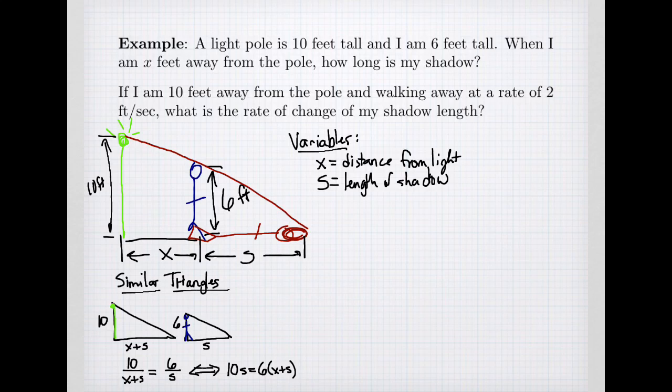Let's find out how long my shadow is. If I am x feet away, how long is my shadow? I need to solve for s. 10s equals 6x plus 6s, so 4s equals 6x. The length of my shadow is 6 over 4x, or 3 halves x. That answers the first question.